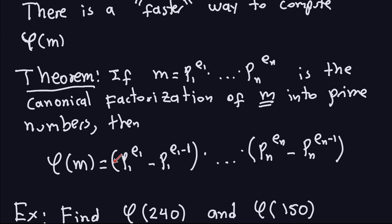Phi of m is actually this formula right here. What you're going to do is compute a product. The first factor is going to be the first prime power in the factorization of the number, minus exactly that same power but with the exponent reduced by 1. Keep doing that for all the powers in the canonical factorization of m. So the last factor in phi of m will be the last prime to its exponent, minus the same thing with the exponent reduced by 1. That's how you compute phi of m using the canonical factorization.